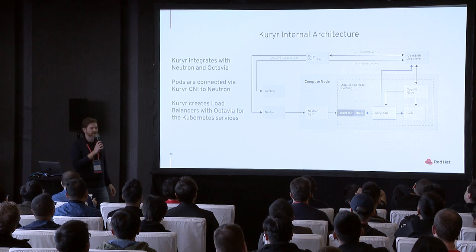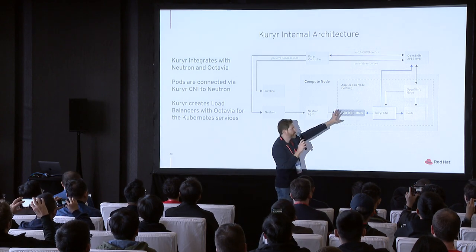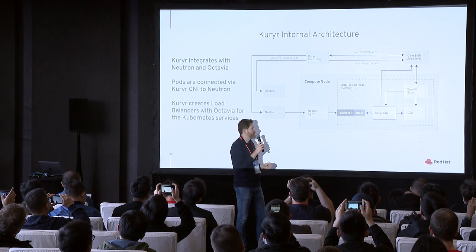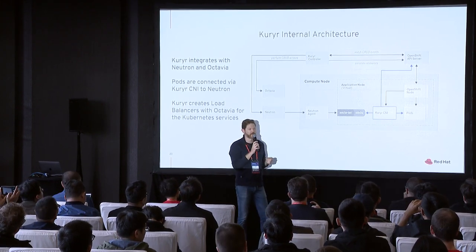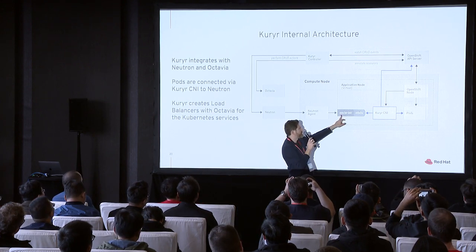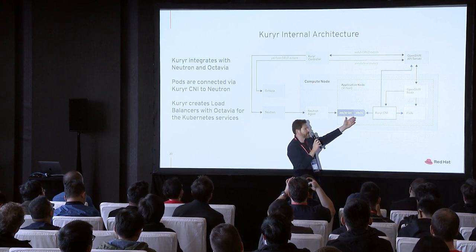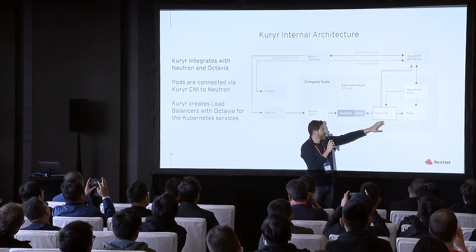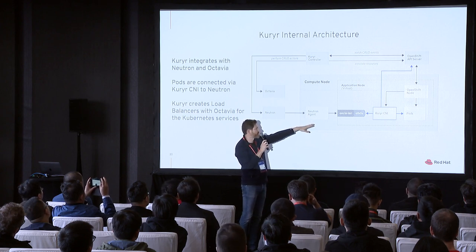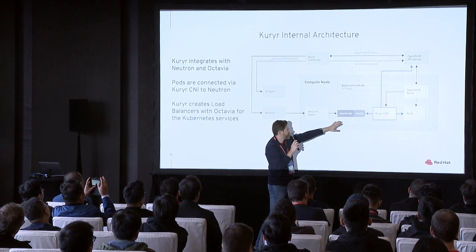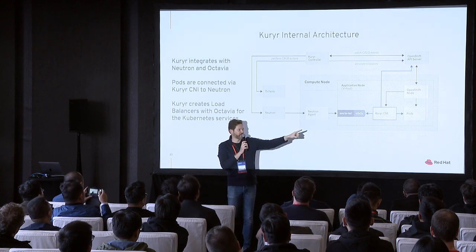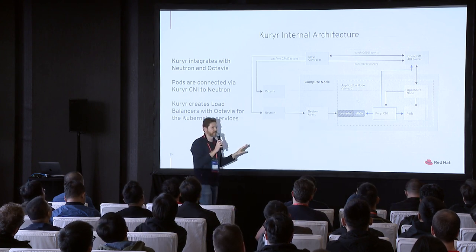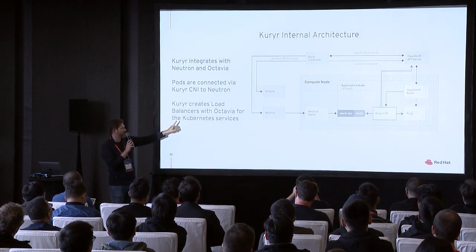Here's a bit more about the Kuryr internal architecture. This would be an OpenStack compute node. In this compute node you have a virtual machine which is an OpenShift or Kubernetes node. The CNI of Kuryr is connected to the pods, and on the outside it's connected to Neutron. This is where the magic happens — it does a more-or-less translation saying, 'You have a VXLAN tunnel there, so I'm going to use this VXLAN endpoint to connect this pod that wants to go to another VM.' It's integrated with both Octavia and Neutron.